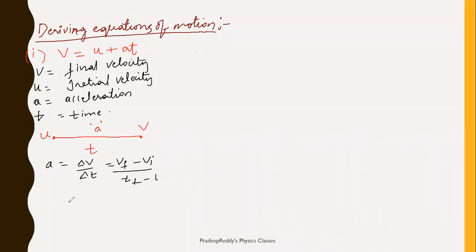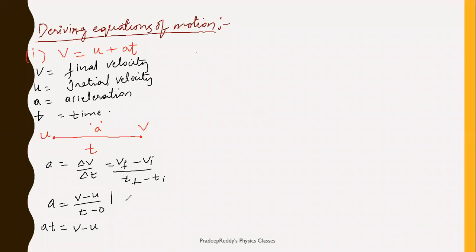Δv equals final velocity minus initial velocity, divided by the time interval — final time minus initial time. So clearly you can write acceleration = (v − u) / (t − 0). This gives a·t = v − u, and from this you can simply write v = u + at. This is the first equation of motion, giving the relation between initial velocity, final velocity, acceleration, and time taken.